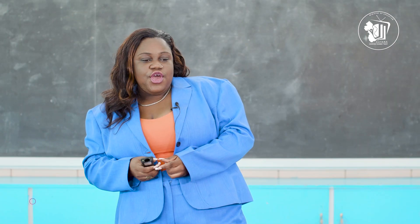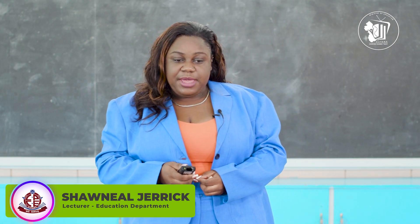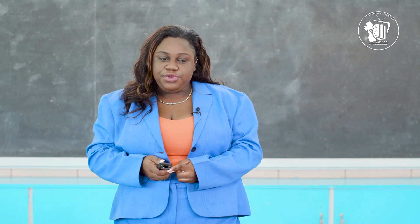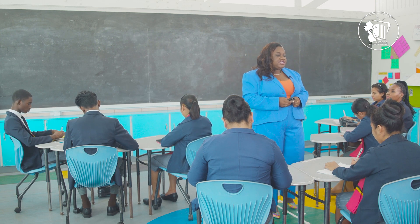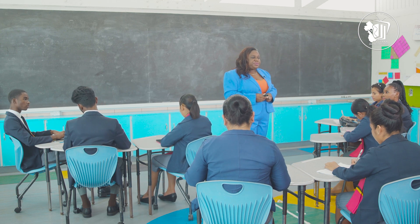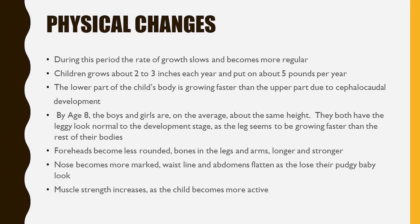By the beginning of middle childhood, children typically have acquired a leaner, more athletic appearance. Girls and boys still have similar body shapes and proportions until both sexes reach puberty, growing about 2 to 3 inches and gaining about 5 pounds per year. The lower part of the child's body is growing faster than the upper part due to cephalocaudal development. Skeletal bones and muscles broaden and lengthen, which may cause children to experience pain.